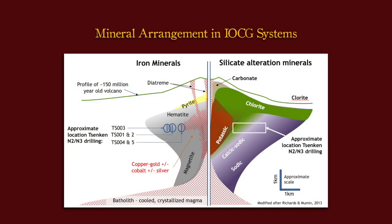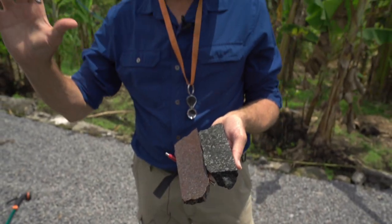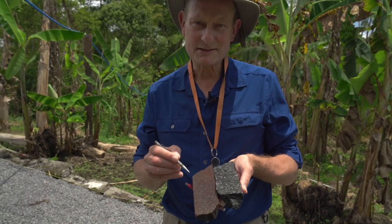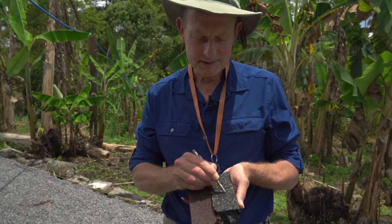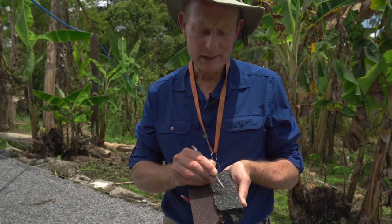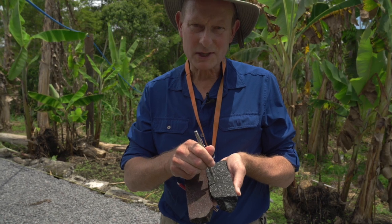As one gets more towards the center of the system, the feldspars become more potassic. So instead of the little laths which are sodic, they become more squarish in cross-section — that shows this is probably a microcline feldspar with more potassium than the sodium-dominated ones. The other mineral showing potassium in this system is the black mineral in the matrix: it scratches relatively easily and is a mica called secondary biotite.